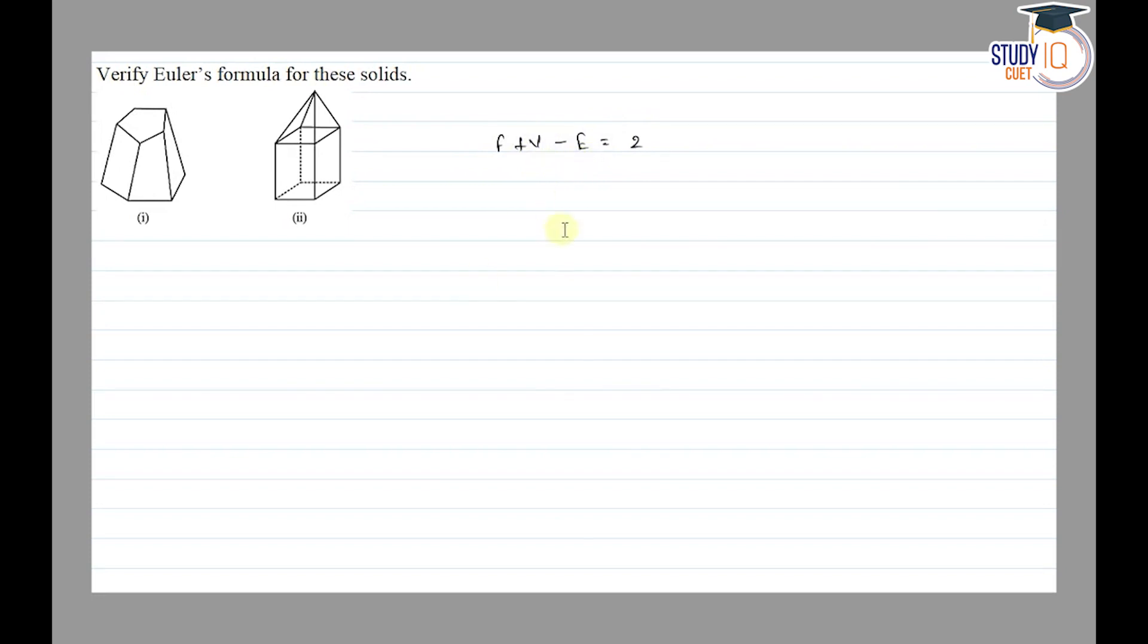And E is number of edges. This is our Euler's formula.